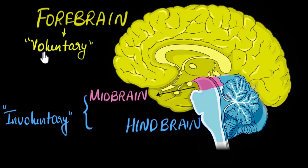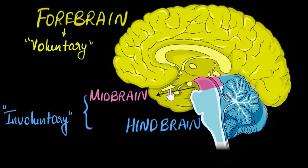How do we remember which part does which? What makes humans special is their big forebrain and our amazing intellectual ability — our intelligence. The forebrain gives us our intelligence, which is why I can do all my thinking, make decisions, walk, and talk. That's how I remember that the forebrain controls voluntary actions.